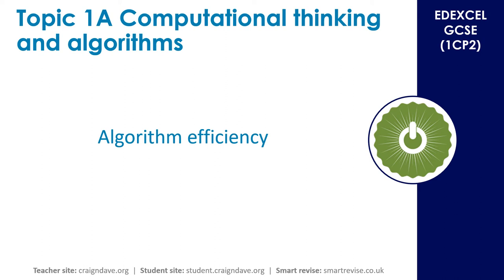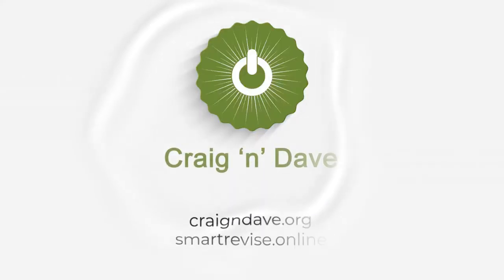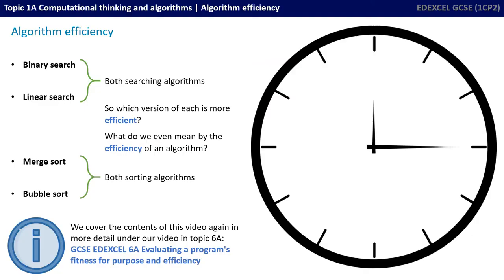In this video, we'll be taking a look at algorithm efficiency. There are four algorithms you need to know about for the GCSE: two searching algorithms, the binary and linear search, and two sorting algorithms, the merge and bubble sort.